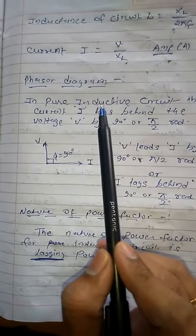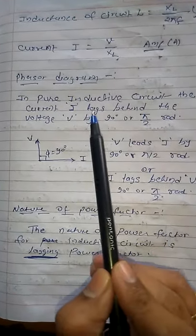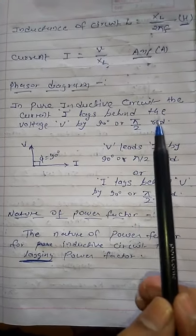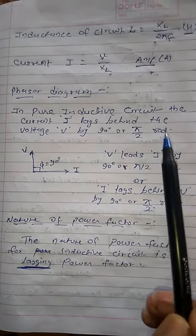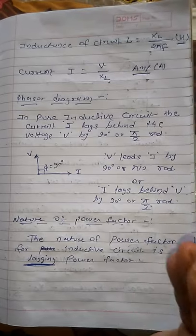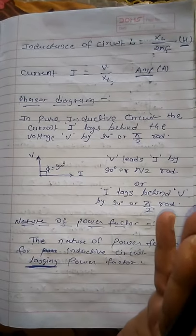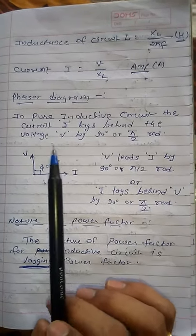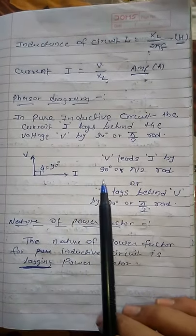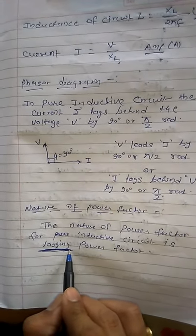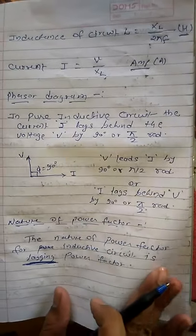Phasor diagram: In a pure inductive circuit, current I always lags the voltage by 90 degrees, and voltage always leads the current I by 90 degrees. Regarding the nature of power factor — we describe it with respect to voltage and current relation. Because in a pure inductive circuit, current lags voltage by 90 degrees, the nature of power factor for a pure inductive circuit is always lagging power factor.